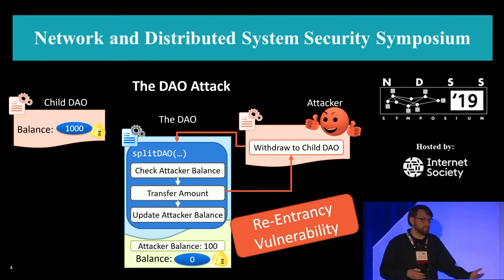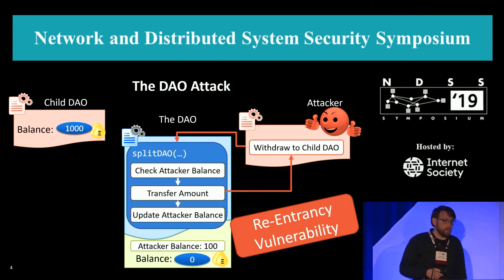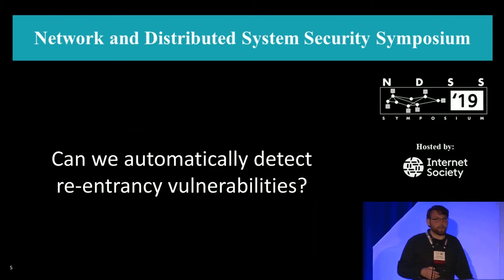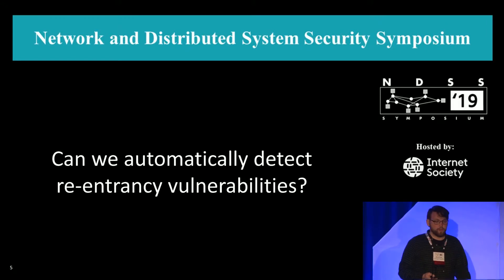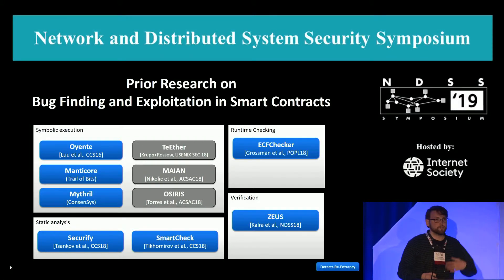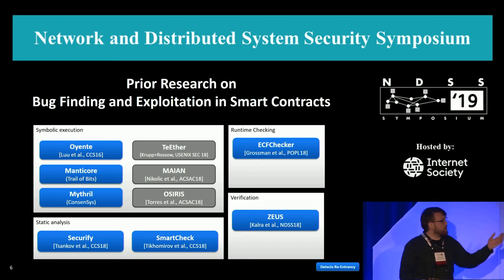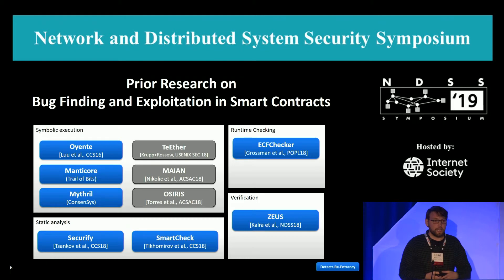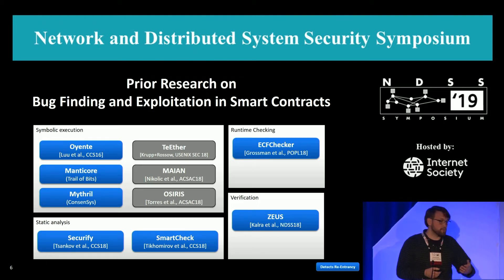This is what we call a re-entrancy attack. The question is, can we somehow automatically find out if our contracts are vulnerable? There has been a lot of research and bug-finding, exploitation, and verification on smart contracts, and the blue ones are works which actually claim to detect re-entrancy bugs and vulnerabilities.